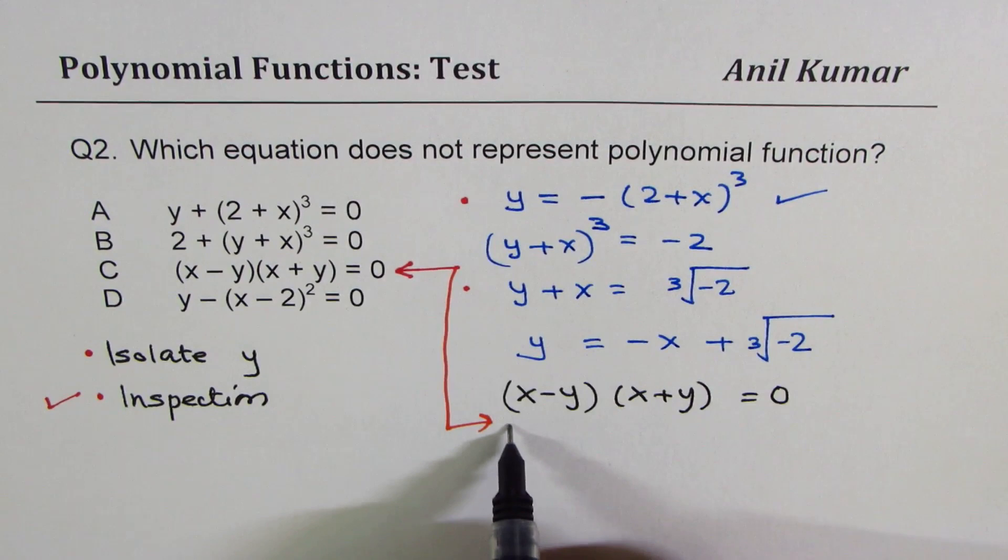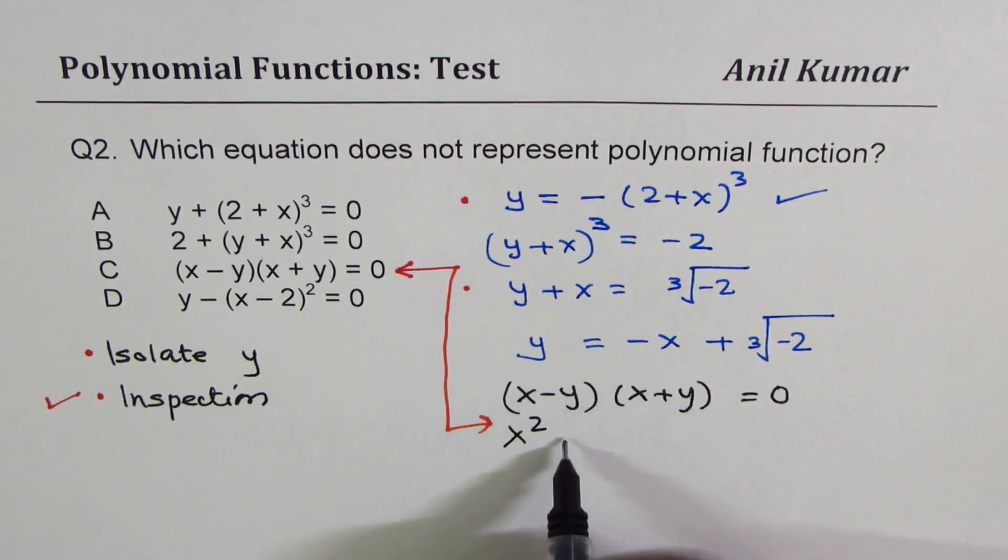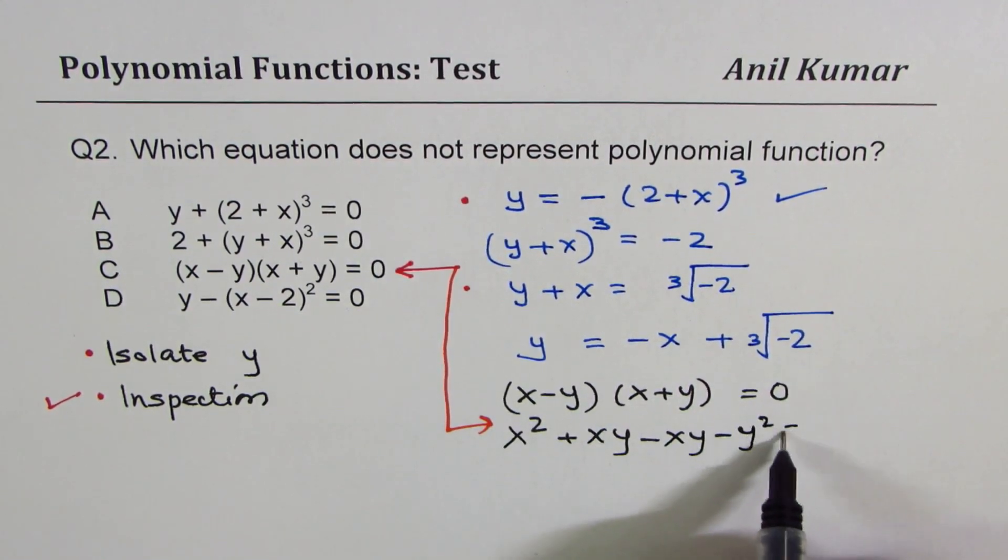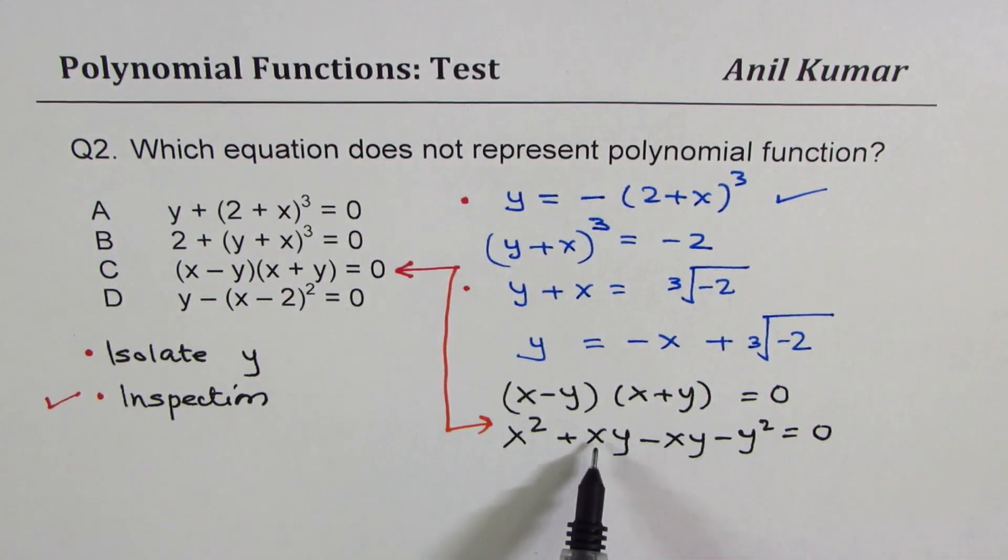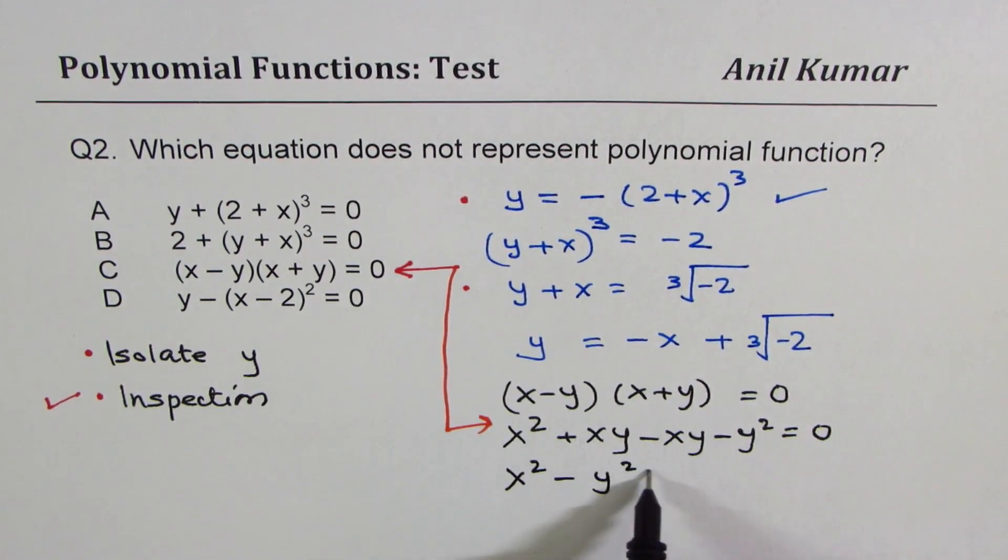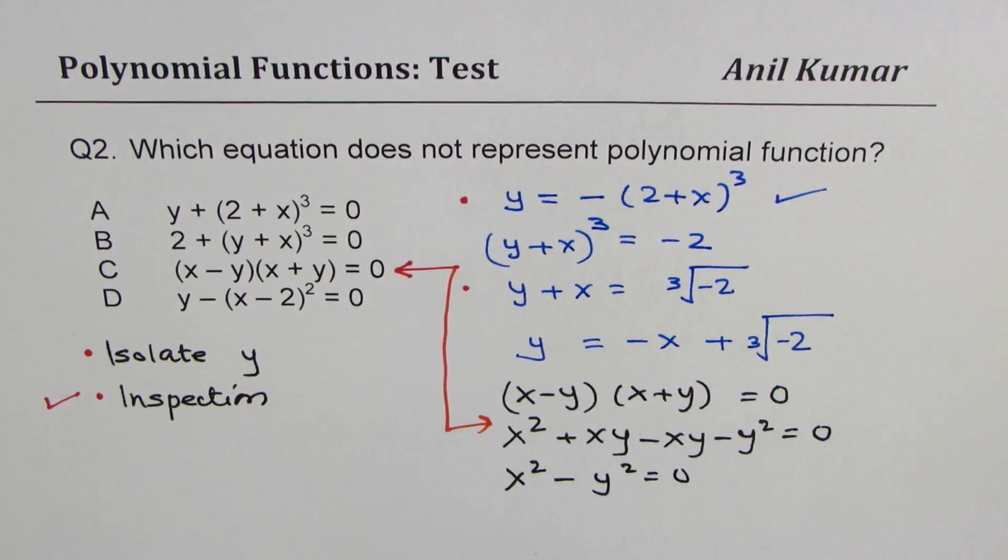if we expand, we get x square and we get plus xy and then you get minus xy and minus y square equals to 0. Now xy plus xy is 0. You could have straight away written x square minus y square equals to 0 also.